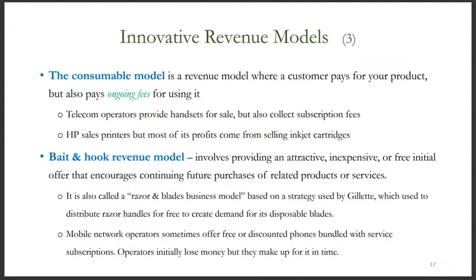The bait and hook revenue model involves providing an attractive, inexpensive, or free initial product or service offering. The goal is to encourage continuing future purchases of related products or services. For example, Gillette distributes razor handles for free to create demand for its disposable blades. Businesses that adopt this revenue model will initially lose money, but they make up for it over time.